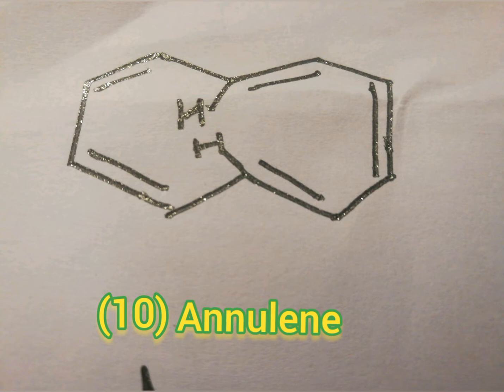10-annulene, it is cyclic, has pi bonds and is conjugated and follows the rule having 10 pi electrons, but due to the junction of trans hydrogen having non-planar repulsion. Therefore, it is highly unstable, hence it is not aromatic.